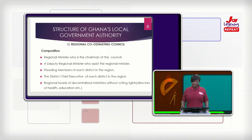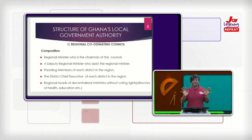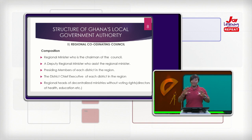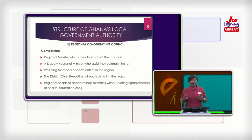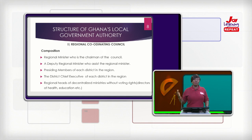There is also a deputy regional minister who assists the regional minister. As part of this particular council, there are the presiding members of each district in the region. When we say district, it is a generic term used for the capacity or the population of a particular area — it could be an ordinary district, a municipal, or a metropolitan. Each one of them has what we call a presiding member. The presiding member presides over the meetings of these groups of districts.